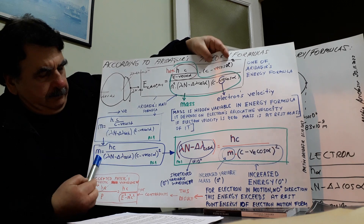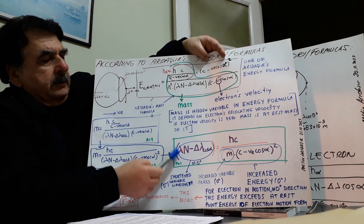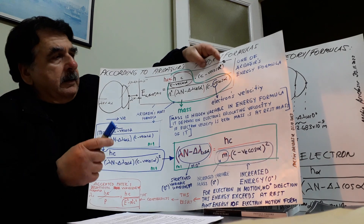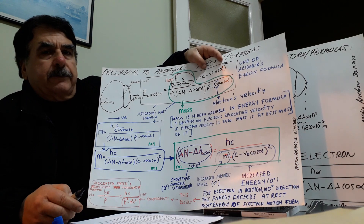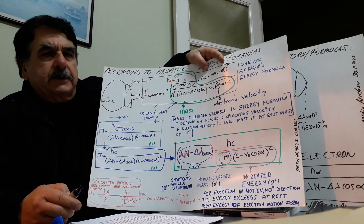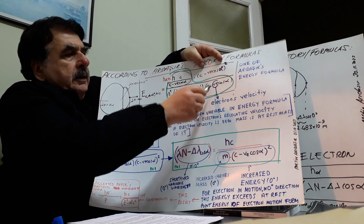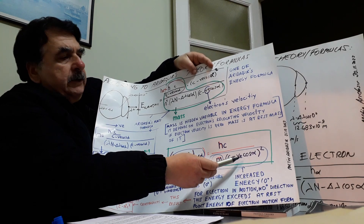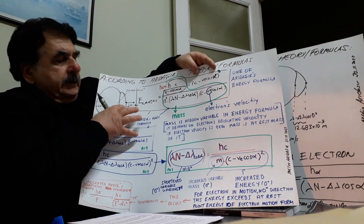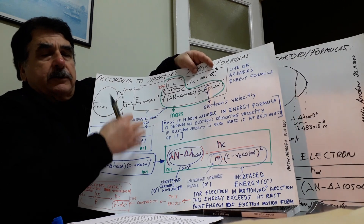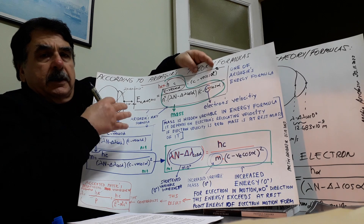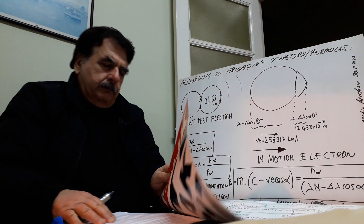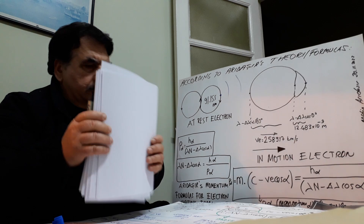Here: mass, mass, mass. This is the shortening wavelength formula. Be careful — velocity of electron. Where is velocity of electron in my formulas? Here: VE, and here: VE. Whether VE, the electron velocity, is zero or not, whether the electron motion form is at rest or in motion, the electron motion form always has momentum.